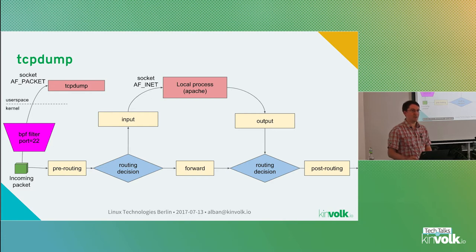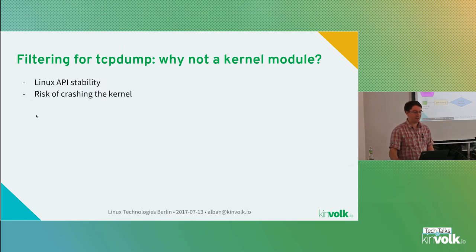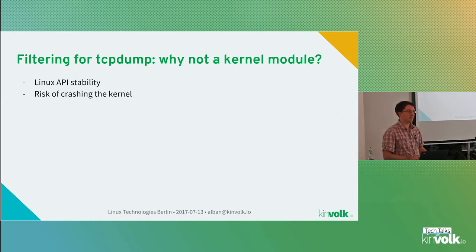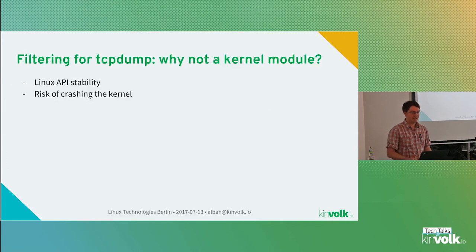To filter the packets tcpdump wants to receive, it uses BPF — a packet filter installed on the socket. tcpdump will not receive all the packets, but only the packets that the filter decides to accept. If the filter says this packet should not be sent to tcpdump, tcpdump is not even woken up. It doesn't take CPU cycles because it's done in the kernel before the packets go to user space. It's done this way and not as a kernel module because kernel modules are tied to a kernel version, would not be practical, and could crash the kernel if there's a bug. With BPF, if there is a bug in the BPF code, the kernel will not crash.